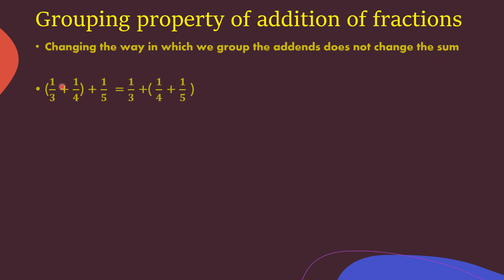Here are three fractions: 1/3 plus 1/4 plus 1/5. On the left hand side, 1/3 and 1/4 are grouped and solved first. On the right hand side, 1/4 and 1/5 are grouped and solved first. But it doesn't matter which group we solve first — if all the addends are the same, the sum will be the same.